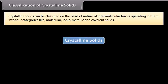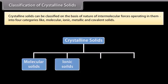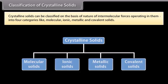Crystalline solids can be classified on the basis of nature of intermolecular forces operating in them into four categories: molecular, ionic, metallic, and covalent solids.